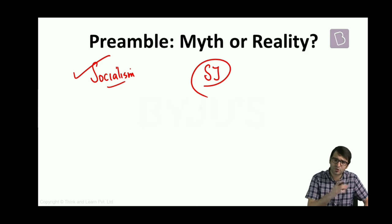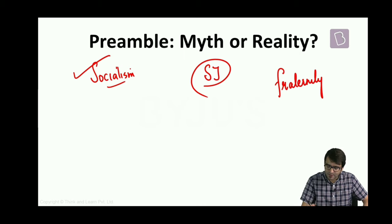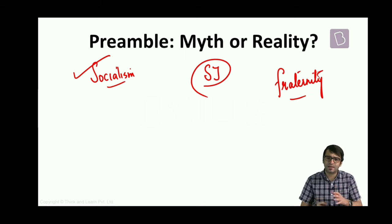If the objective of the Indian constitution is fraternity, then why is it that we are still divided on the basis of our caste, religion, language, region? Why is it that there is a north-south divide, east-west divide in this country?